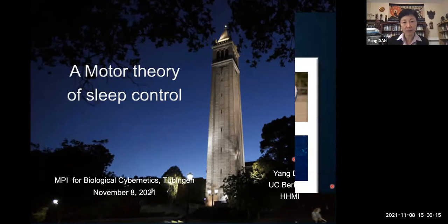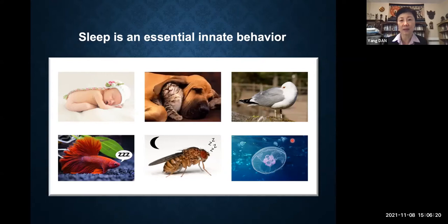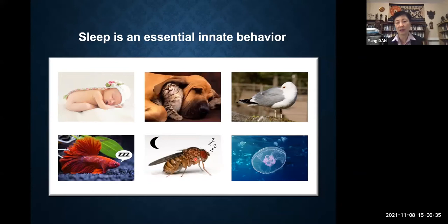Sleep is an essential innate behavior. We actually know how to sleep even before birth — we spend a lot of time in our mother's wombs. As far as we know, all animals sleep, including flies and worms, which are used as animal models to study sleep. Recently it was shown that even jellyfish or hydra, which don't even have a centralized nervous system, sleep as well. So pretty much any animal that has any kind of nervous system has to sleep.